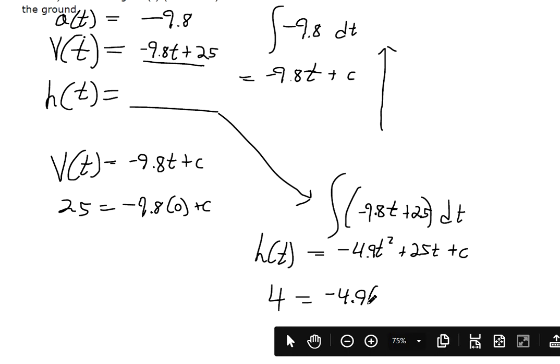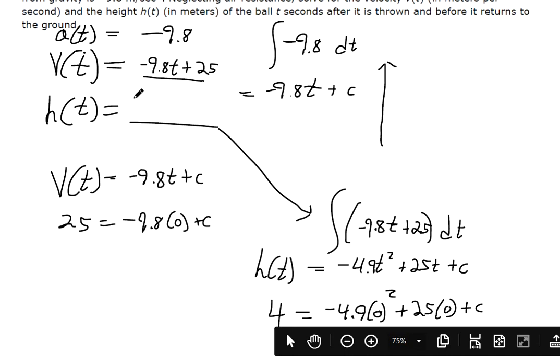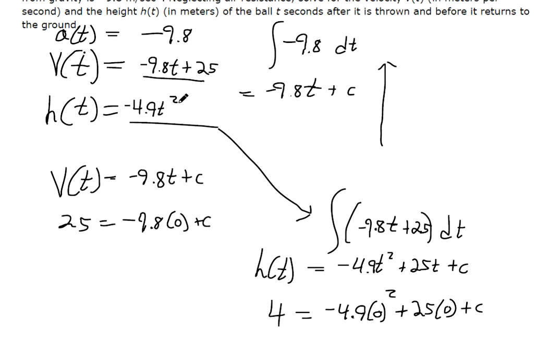I think you can see where this one's going. If you plug in 0 everywhere, all those terms are just 0, so we get c equals 4. So our height function should be negative 4.9t squared plus 25t, and then we found out c is 4.